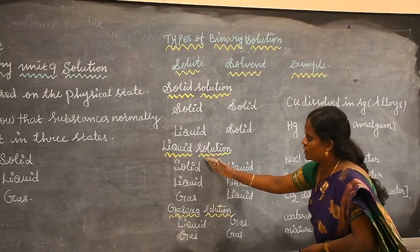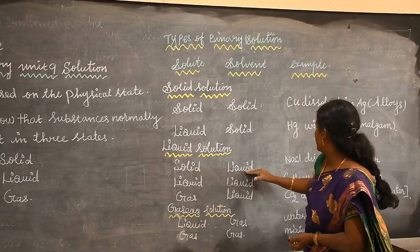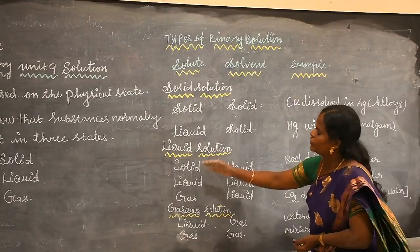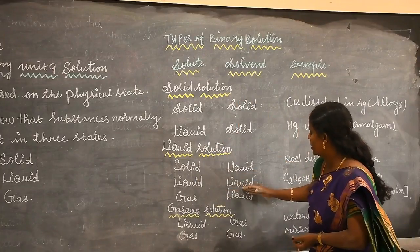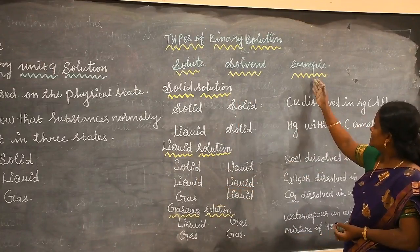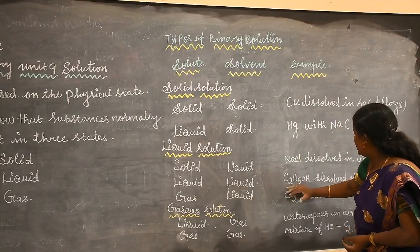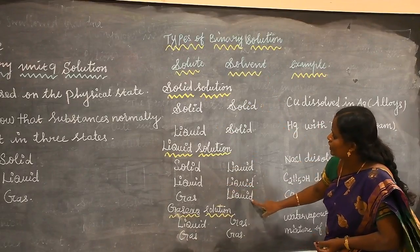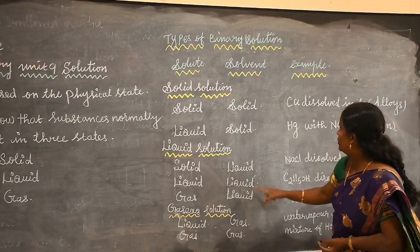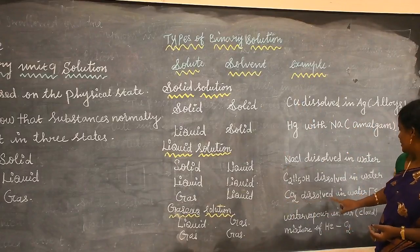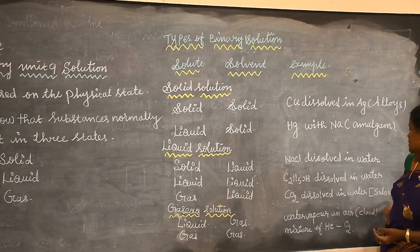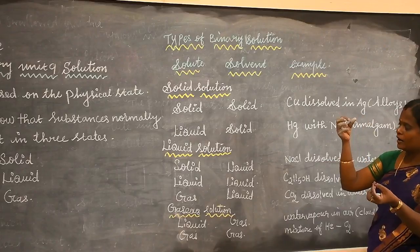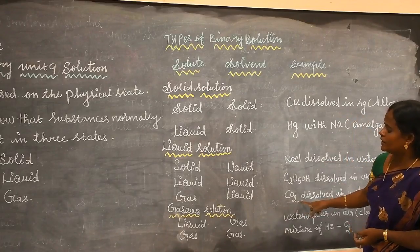For liquid solutions: solid in liquid — for example, sodium chloride dissolved in water. Liquid in liquid — for example, ethyl alcohol dissolved in water. Gas in liquid — for example, carbon dioxide dissolved in water, which is called soda water. When you open a soft drink, the bubbles coming out of the water are carbon dioxide.